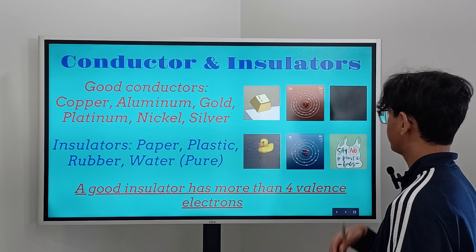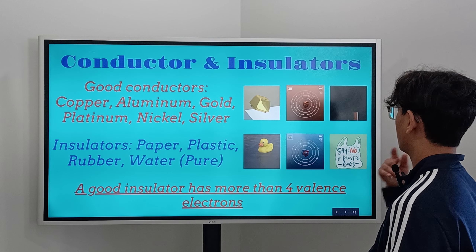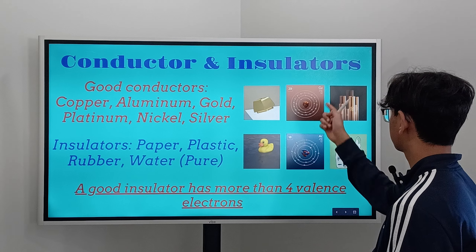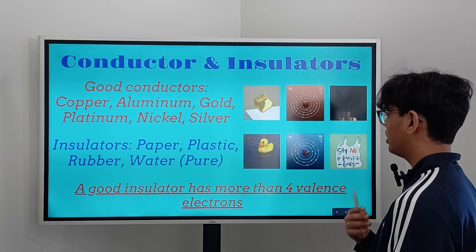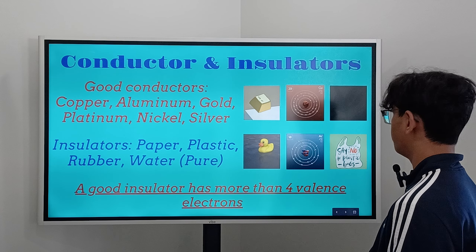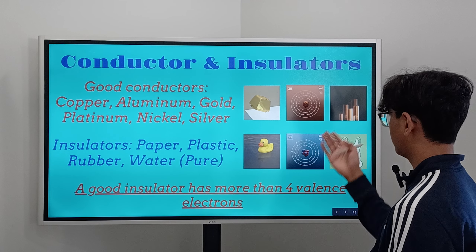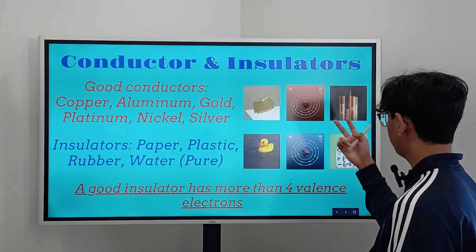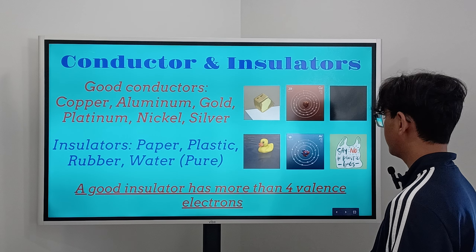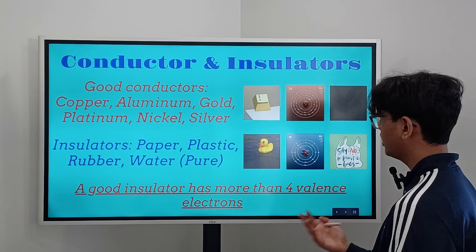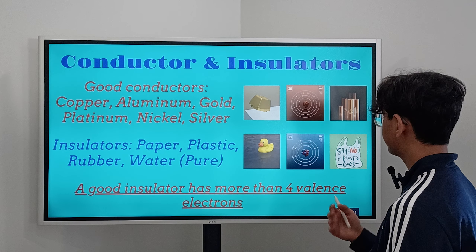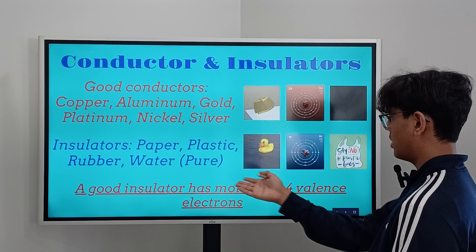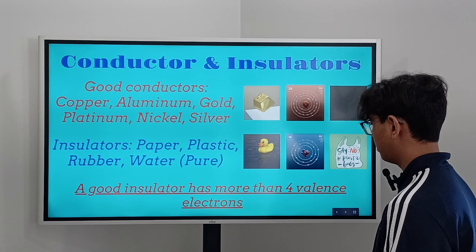The lower the number of valence electrons, the better the conductor. For example, copper has one valence electron, making it a really good conductor. With two valence electrons, you'd still be a pretty good conductor. The higher you go in valence electrons, the better an insulator you become.